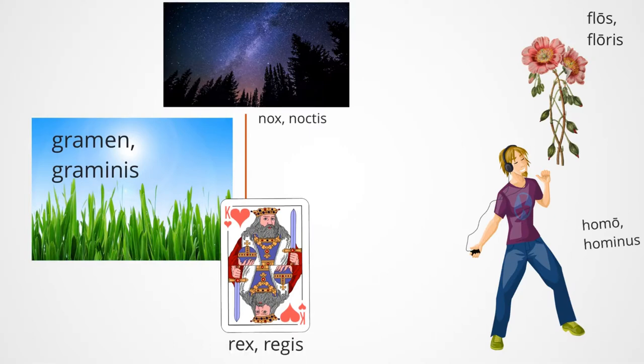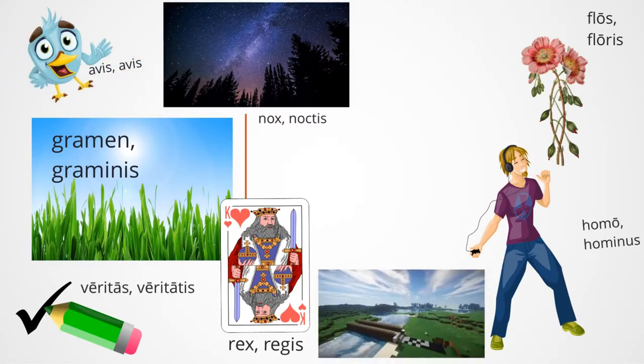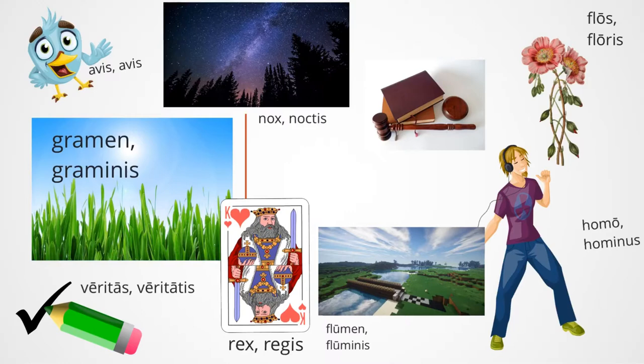How about truth? Veritas, veritatis. What's the Latin noun for bird? That's right, always, always. How about river? Flumin, fluminis. And finally, what is the Latin noun for law? You got it, lex legis. Great work guys, keep on working on memorizing those nouns.